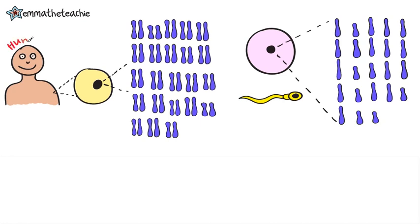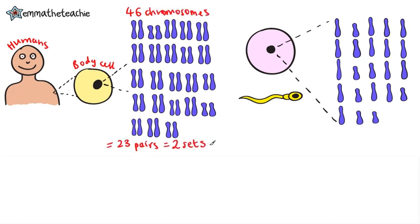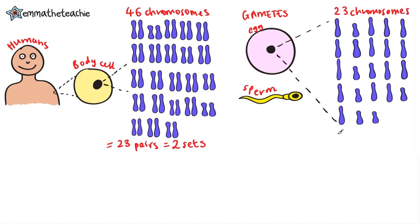First up, you need to know that humans have got 46 chromosomes in their body cells. These are arranged in 23 pairs, or we say they have two sets of chromosomes. In gametes, like the egg cell and the sperm cell, they have 23 chromosomes, not arranged in pairs. We say they have one set of chromosomes.